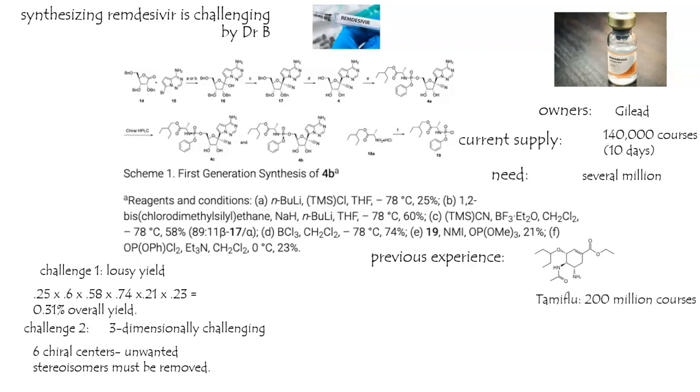For an example, this is Tamiflu, which is used for the flu, not for the coronavirus, but for the flu. And I've taken this drug myself. I found it to be very effective. And Gilead, in conjunction with other companies to help them out, made 200 million courses of this. So yeah, they're experienced making large-scale supplies.